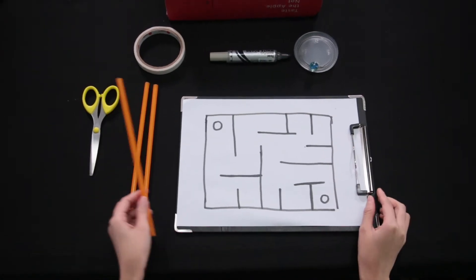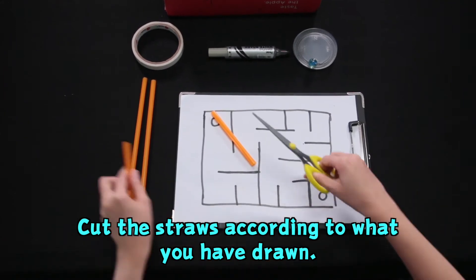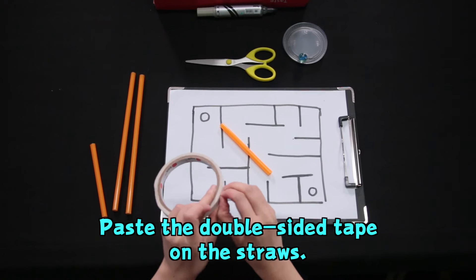Take a straw and cut according to what you have drawn, and take a double-sided tape to stick onto the straw.